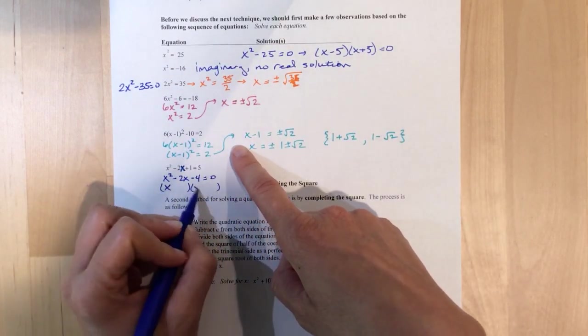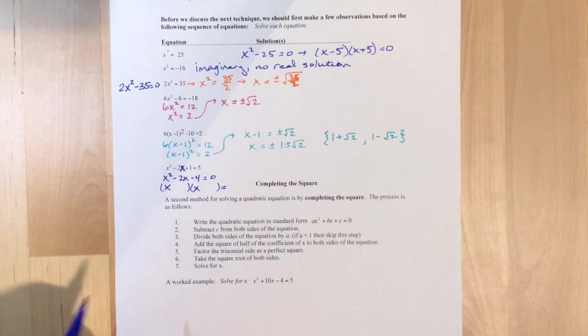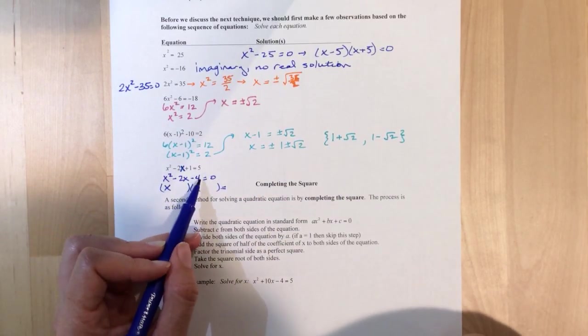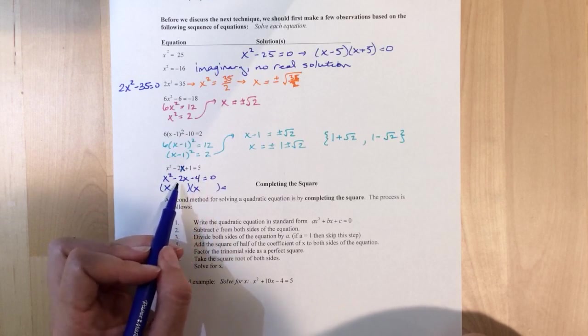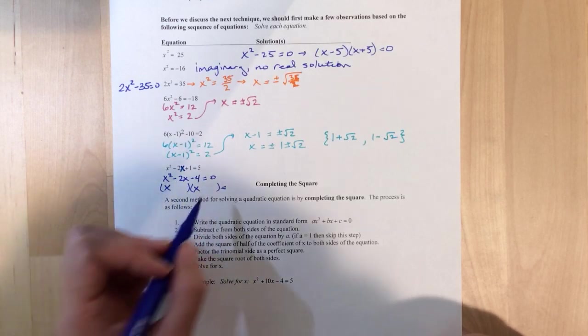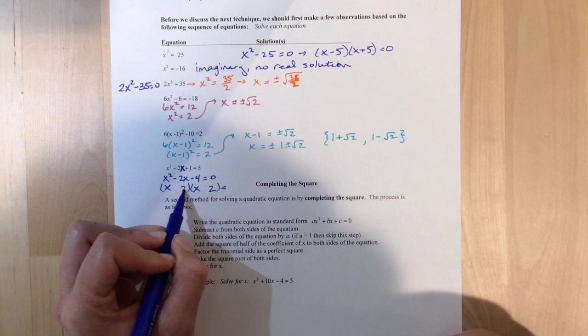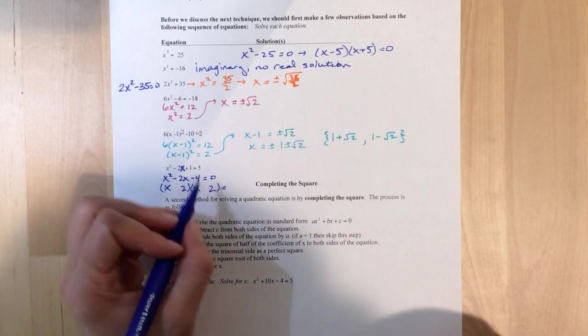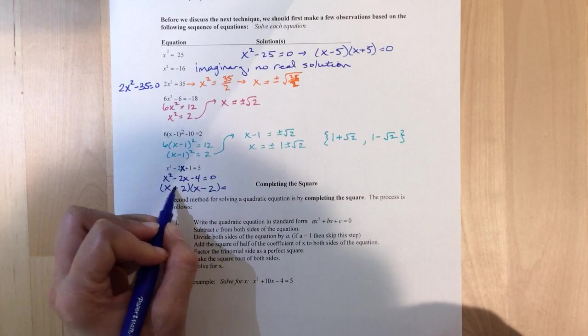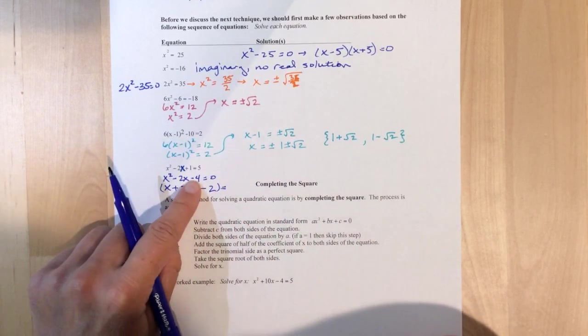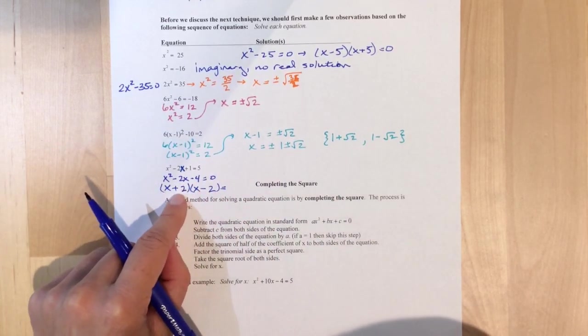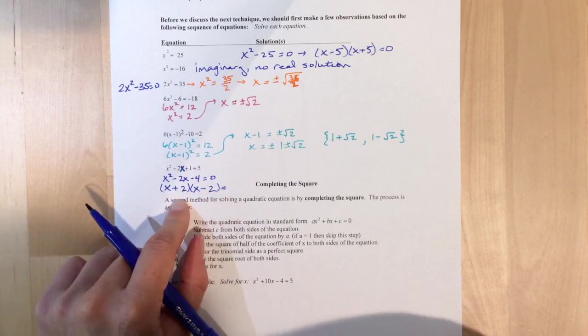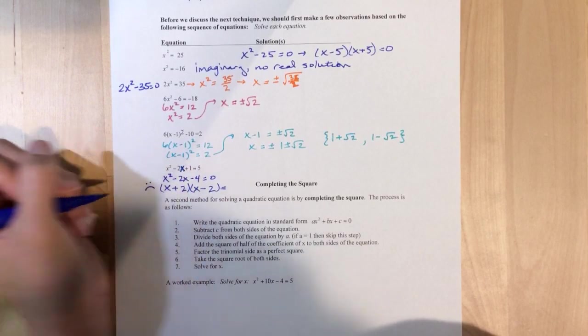Well, if I try to factor, there's no two numbers that multiply to negative 4, but yet also add to negative 2. Because I know that 2 and 2 will give us 4, but to get a negative, one of them has to be negative, and one has to be positive, right? To get negative 4 here. But here, if I have plus 2x minus 2x, it's not going to work. Y'all see that?